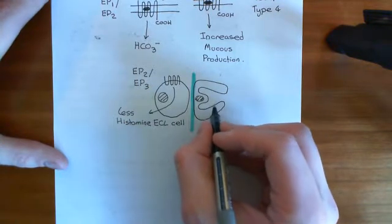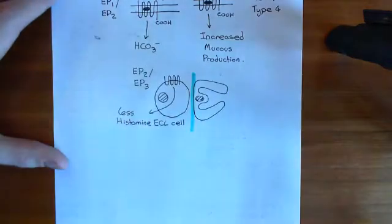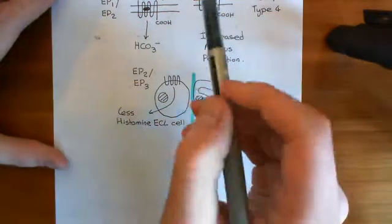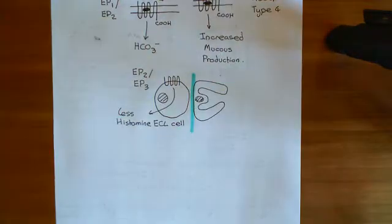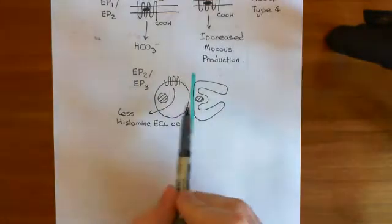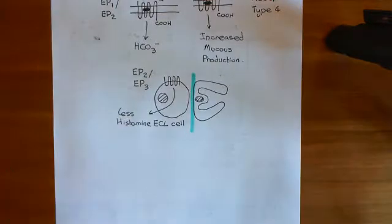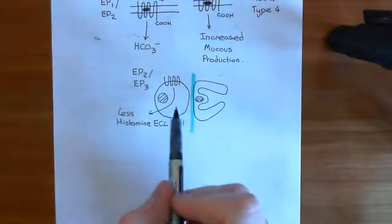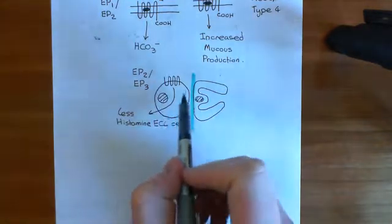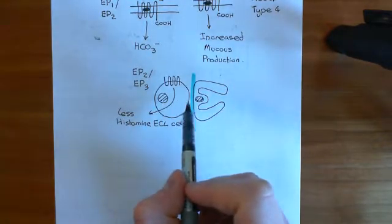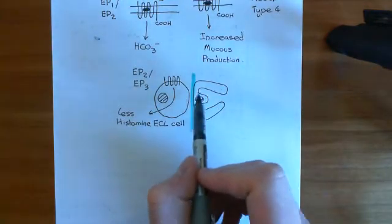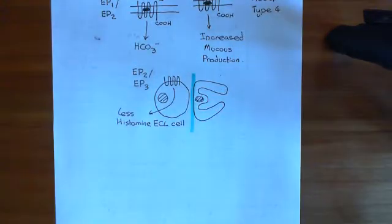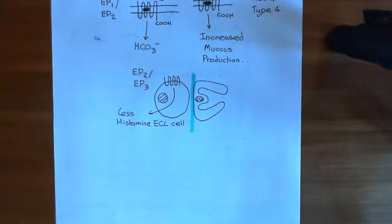So overall, prostaglandin E2 protects the columnar epithelial cells by increasing their secretion of mucus and bicarbonate ions. It also tries to reduce the acidity of the lumen by reducing histamine secretion by the enterochromaffin-like cells, thereby reducing the basal level of hydrochloric acid secretion by the parietal cells. Both of these actions are aimed at protecting the gastric mucosa from being burnt by stomach acid.